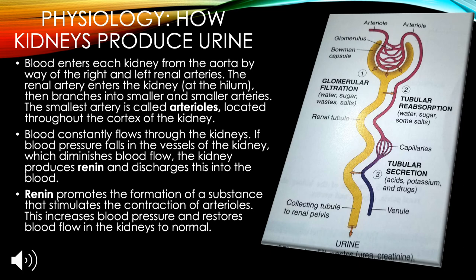Physiology — how kidneys produce urine: Blood enters each kidney from the aorta via the right and left renal arteries. The renal artery branches into smaller and smaller arteries; the smallest, called arterioles, are located throughout the cortex. Blood constantly flows through the kidneys. If blood pressure falls, the kidney produces renin, which promotes formation of a substance that stimulates contraction of arterioles, increasing blood pressure and restoring normal blood flow.